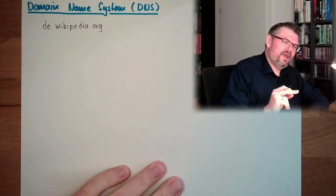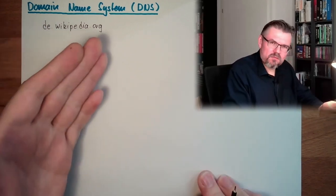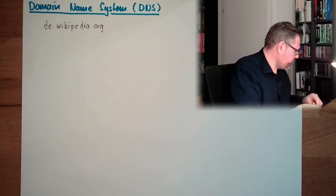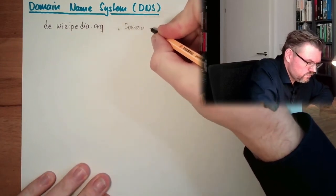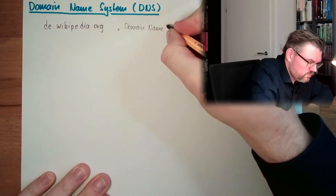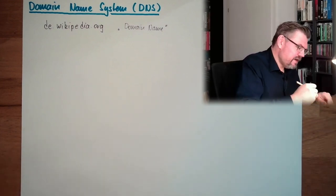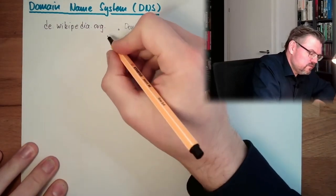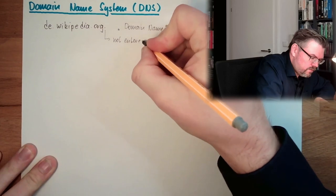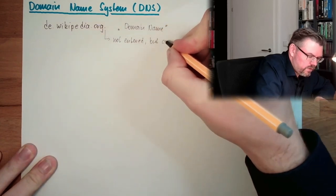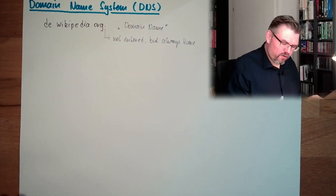What we do not enter, but what is always part of the domain name, is a dot at the end. This trailing dot is not entered by us, but it is always there. This is a typical example of a domain name.